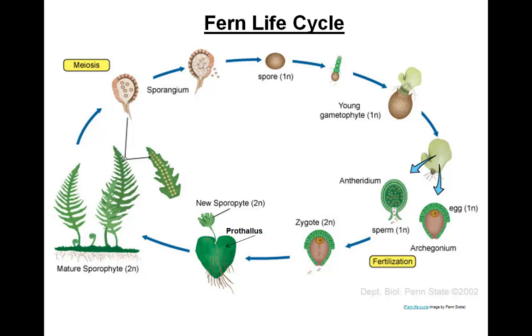On the mature sporophyte, clusters of sporangia develop. The cells undergo meiosis and produce the haploid spores, which are then released to begin the next generation.